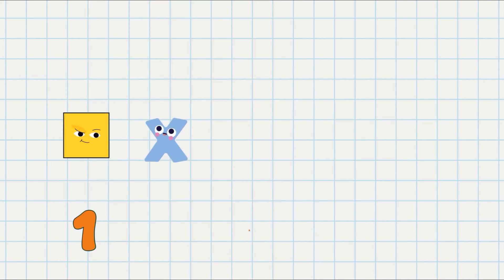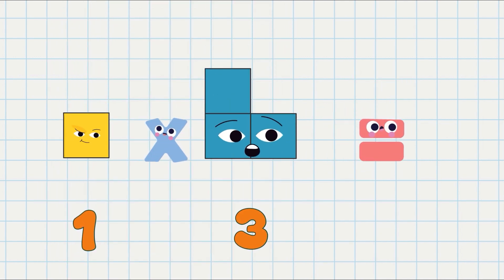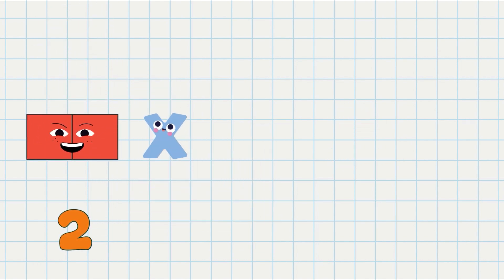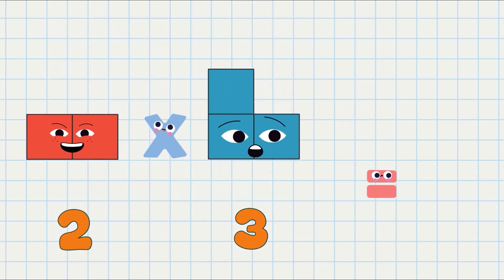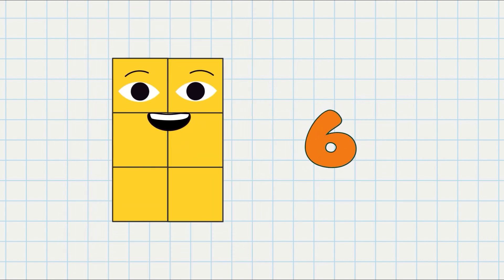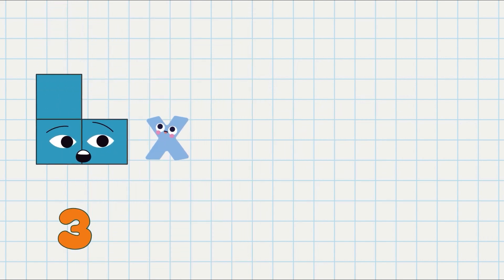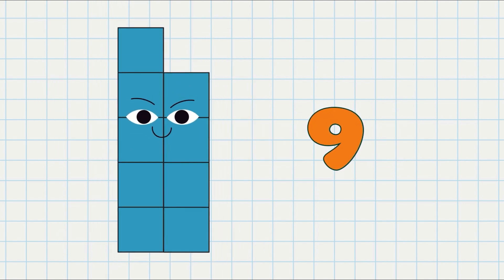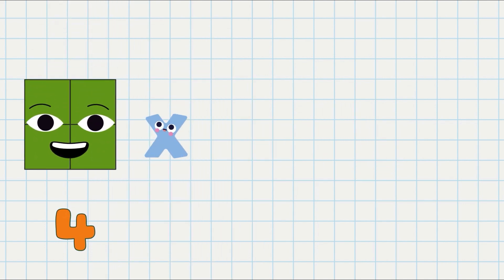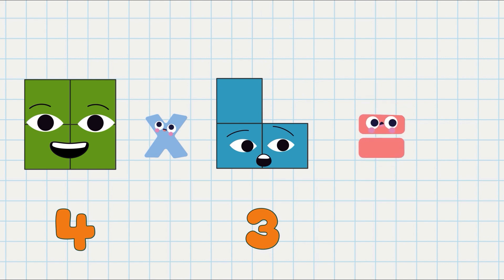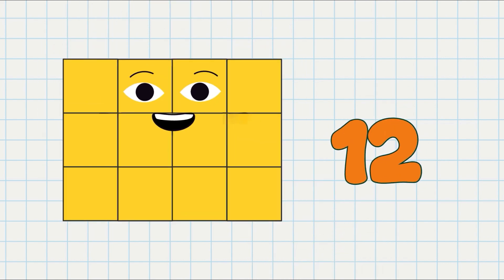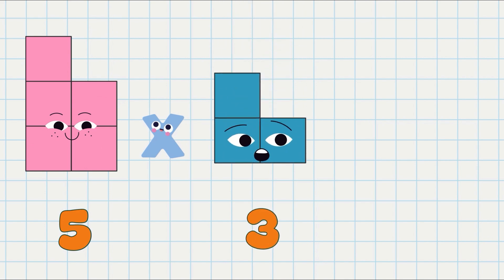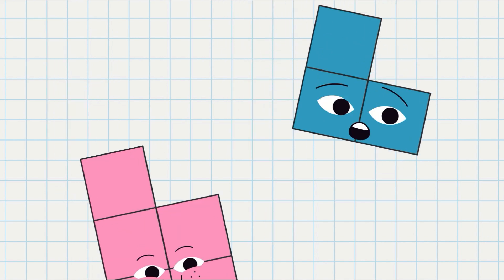1 times 3 equals 3. 2 times 3 equals 6. 3 times 3 equals 9. 4 times 3 equals 12. 5 times 3 equals 15.